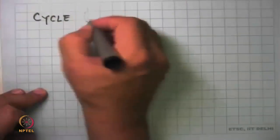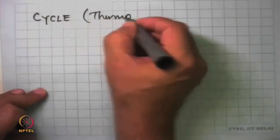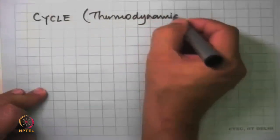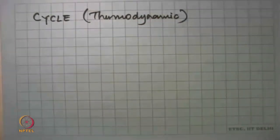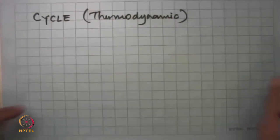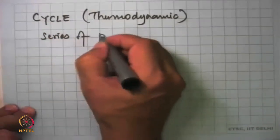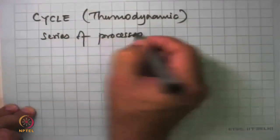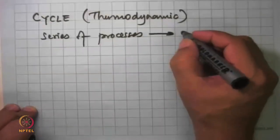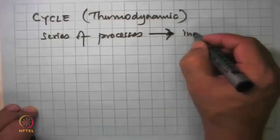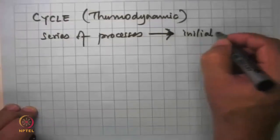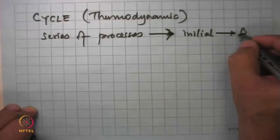What we have done now is define the process, and we have added one more definition to our vocabulary: a terminal cycle. It is nothing but a substance or a system that undergoes a series of processes but restores back to the initial state — from the initial state it comes back to its initial state.